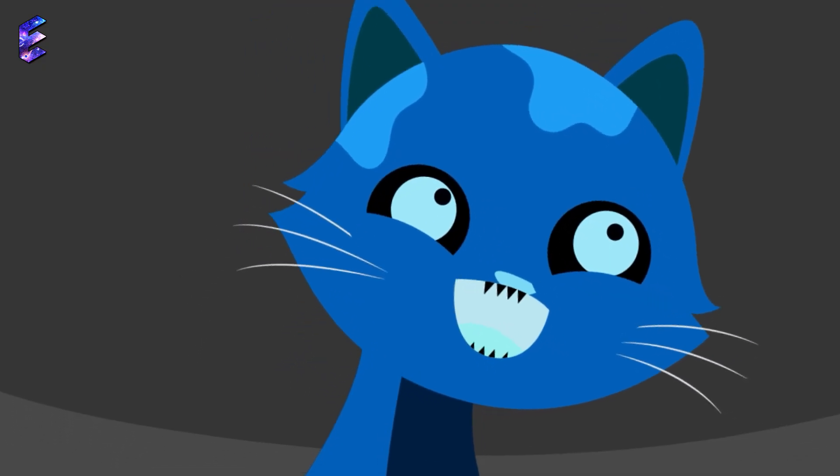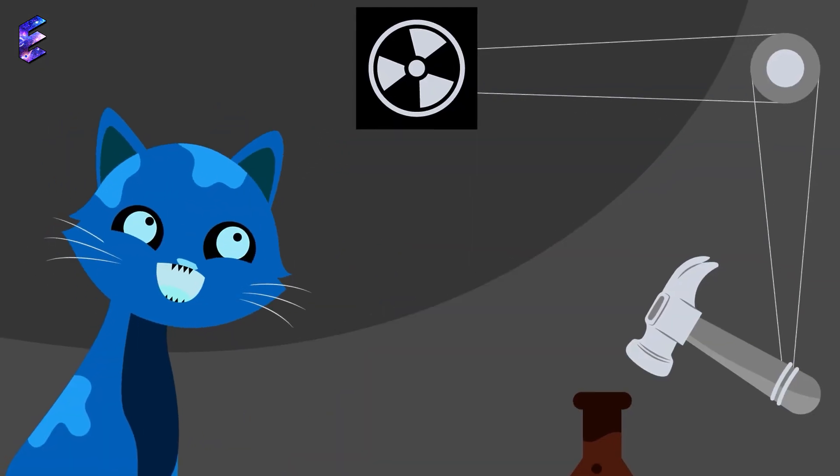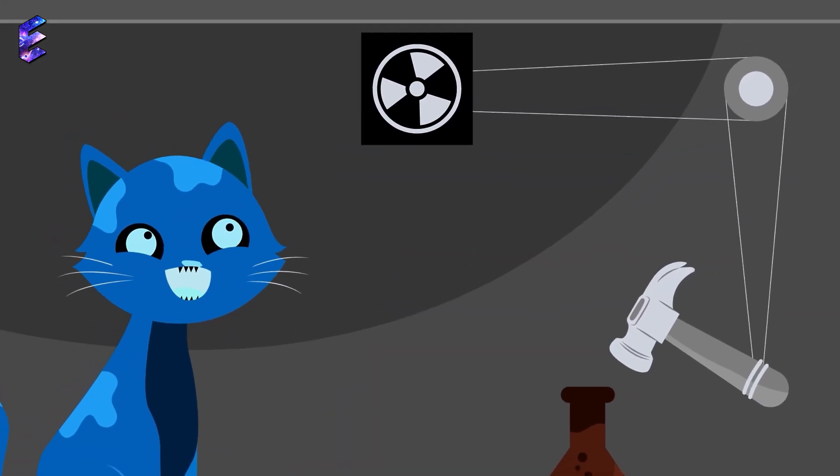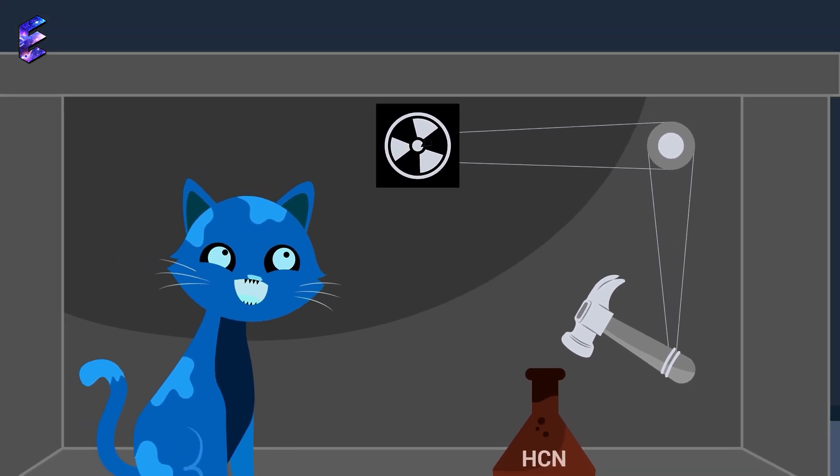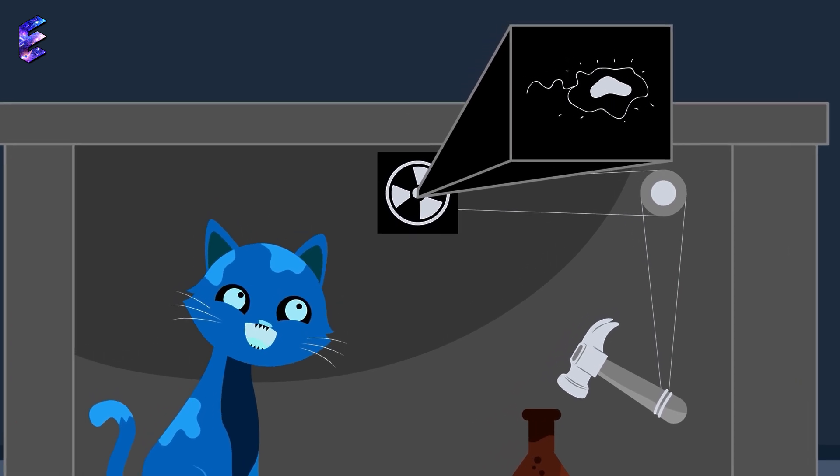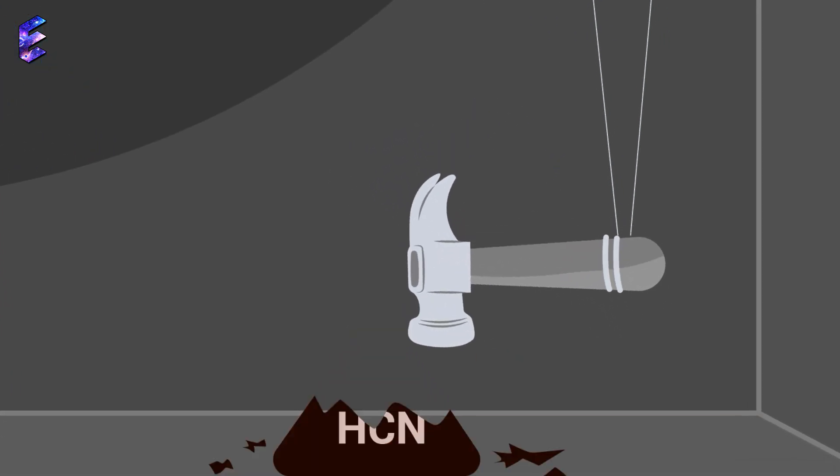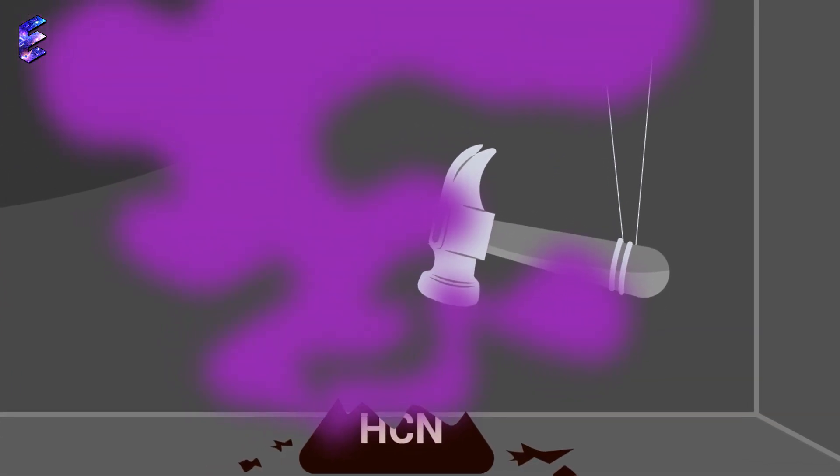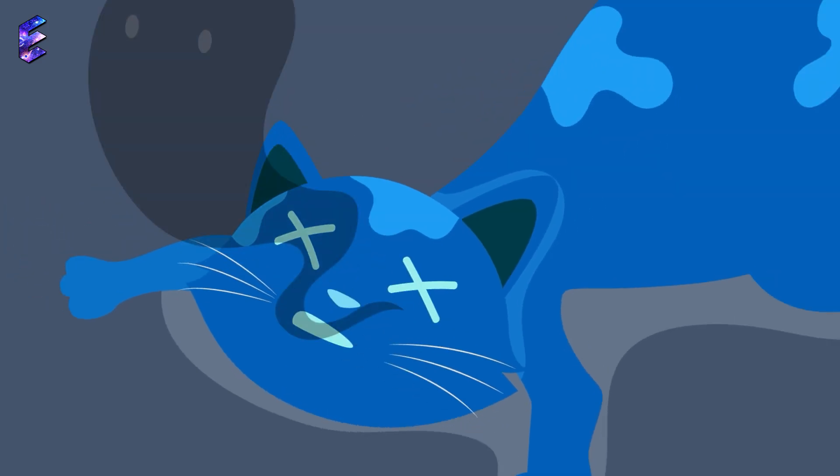Here is a simplified version of the thought experiment. A living cat is placed into a steel chamber along with a hammer, a vial of hydrocyanic acid and a very small amount of radioactive substance. If even a single atom of the radioactive substance decays during the test period, a relay mechanism will trip the hammer, which will in turn break the vial of poisonous gas and cause the cat to die.